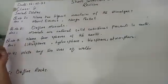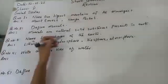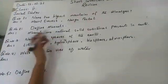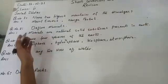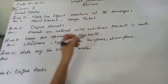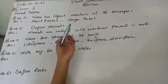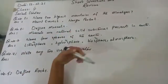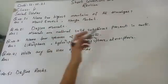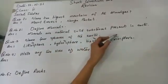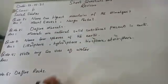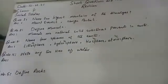Lithosphere is called land. Hydrosphere is called water. Biosphere is called living organisms. Atmosphere is called abo-hawa (air/weather).